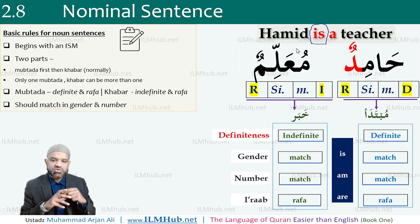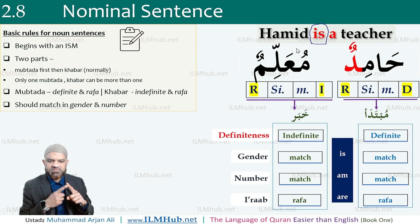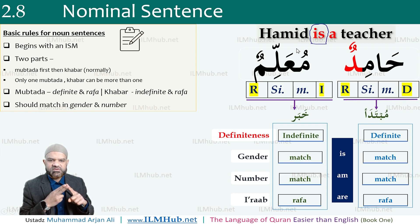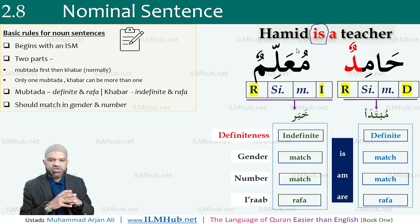Summary of the rules: a jumla ismiya begins with an ism and has two parts — muptada and khabar. The muptada is definite and in rafa. The khabar is indefinite and in rafa, and should match the muptada in gender and number.